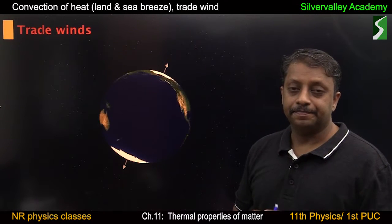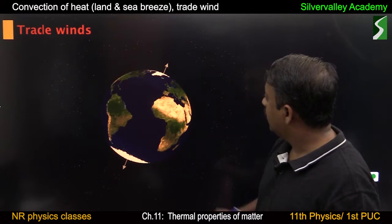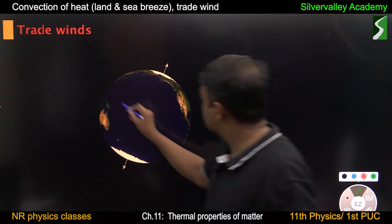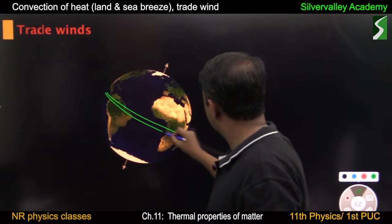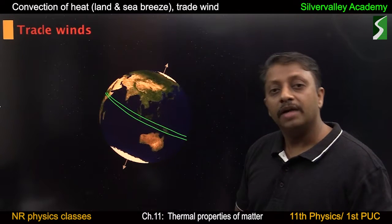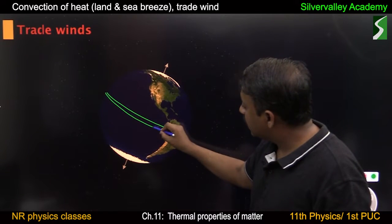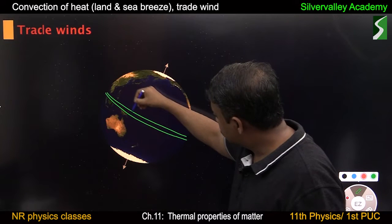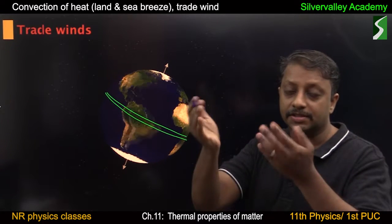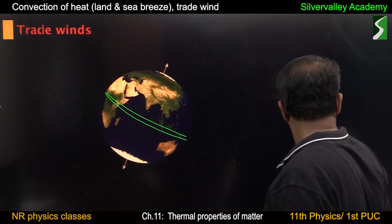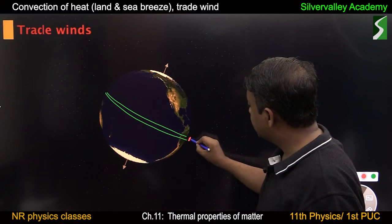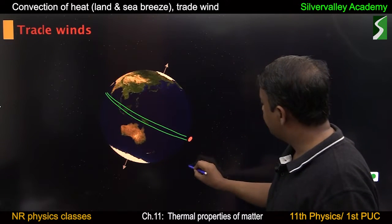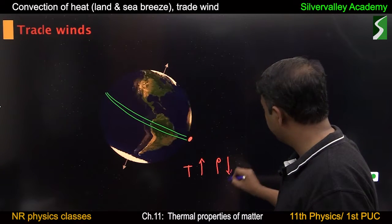Third one: trade winds. Earth has an axis of rotation — you can see the axis of rotation here. This is the equatorial region. The equatorial region receives more sunlight than regions at the poles, so this region receives more heat energy. As a result, temperature of this region increases. Air closer to the equator is heated faster than air closer to the poles. This air absorbs more heat energy — temperature increases, density decreases, and this air rises.